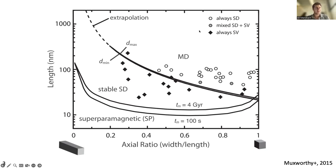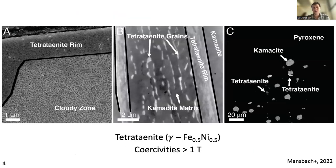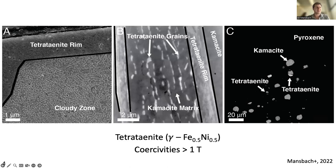The focus of my talk today is looking at a different paleomagnetic recorder: tetrataenite. Tetrataenite is a very interesting mineral — an ordered iron-nickel metal that has been identified as a really good paleomagnetic recorder, in part because it has very high coercivities, often greater than about one Tesla. Tetrataenite that has been used for paleomagnetic studies has often been found in what is called the cloudy zone microstructure, which forms as a result of spinodal decomposition giving it this wormy-looking texture, where each little worm is a tetrataenite grain.